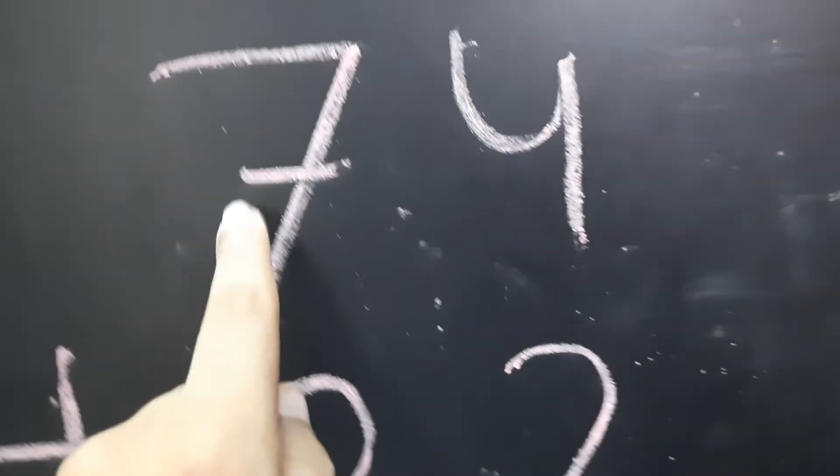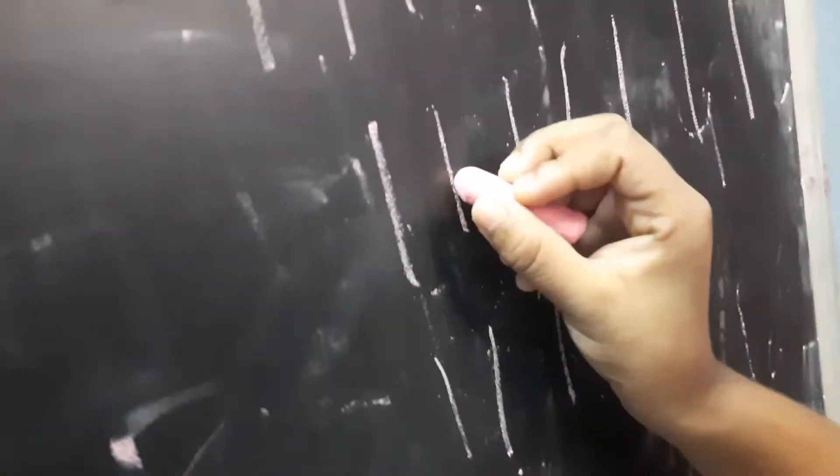And now we draw 7 lines: 1, 2, 3, 4, 5, 6 and 7. And now we draw 3 lines more: 1, 2 and 3. And now we count all of them: 1, 2, 3, 4, 5, 6 and 7, 8, 9, 10. So,